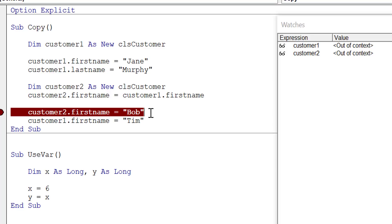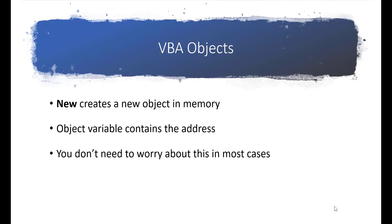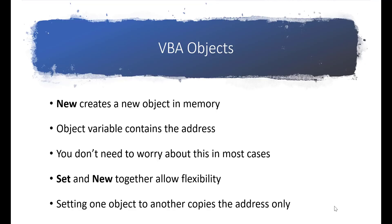It's very important when using VBA objects that you understand this. In summary: 'new' creates a new object in memory, but object variables contain the address, not the object itself. We don't need to worry about this in most cases because VBA handles it for us. Using 'set' and 'new' together gives flexibility to create as many objects as we like. Setting one object variable to another copies the address only — it doesn't copy the object — which is especially important when using collections and dictionaries.